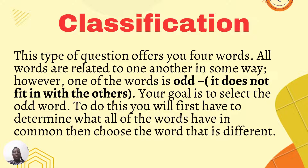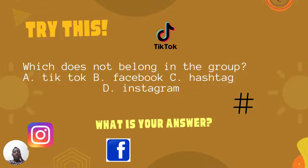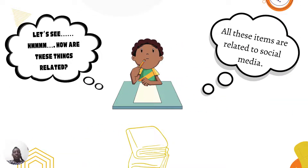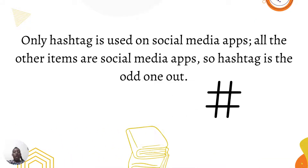Let's look at an example. Which does not belong in the group? A. TikTok, B. Facebook, C. Hashtag, or D. Instagram. I know we are all familiar with these words. What is your answer? How are all these things related? All these things are related to social media. However, only hashtag is used on social media apps — all the other items are social media apps themselves. So hashtag is the odd one out.